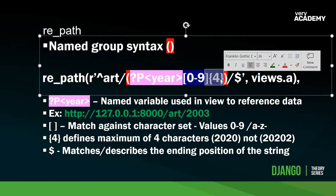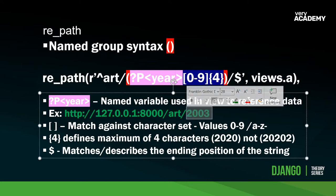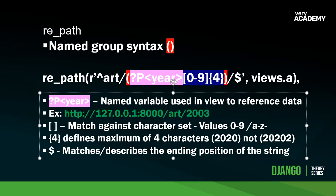Additionally, we can define the length of the match. This defines the fact that the numbers we're passing into this section must be exactly four values. If I were to add a new value, this URL would not be captured at all - it has to be exactly four digits. So you can start to see that we can be really specific and offer more features than the original path.